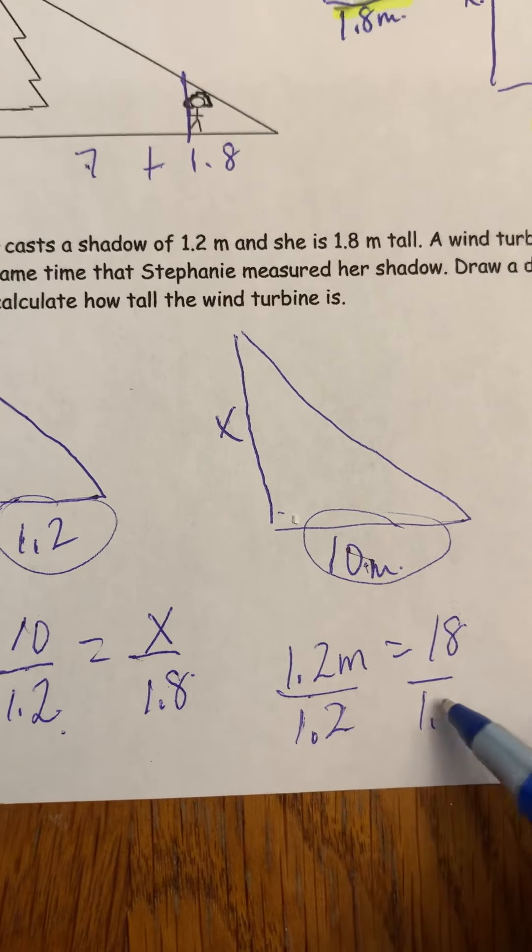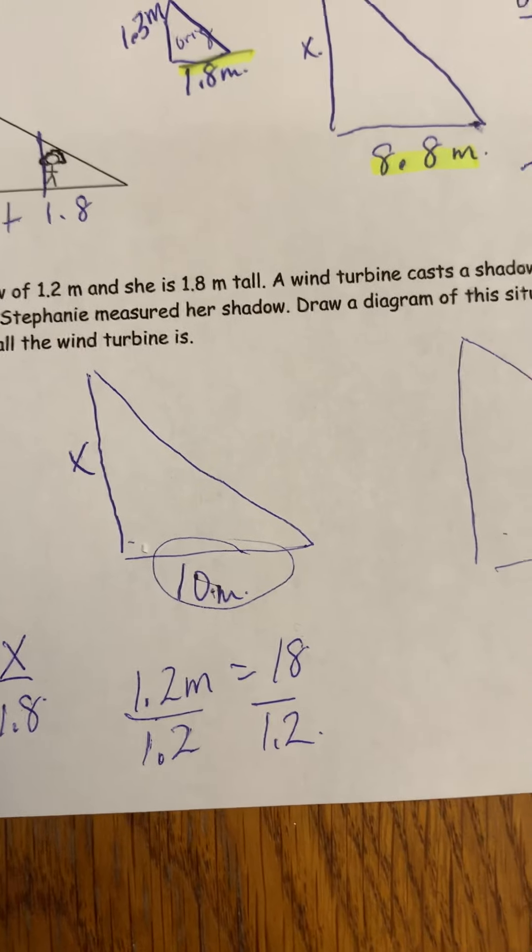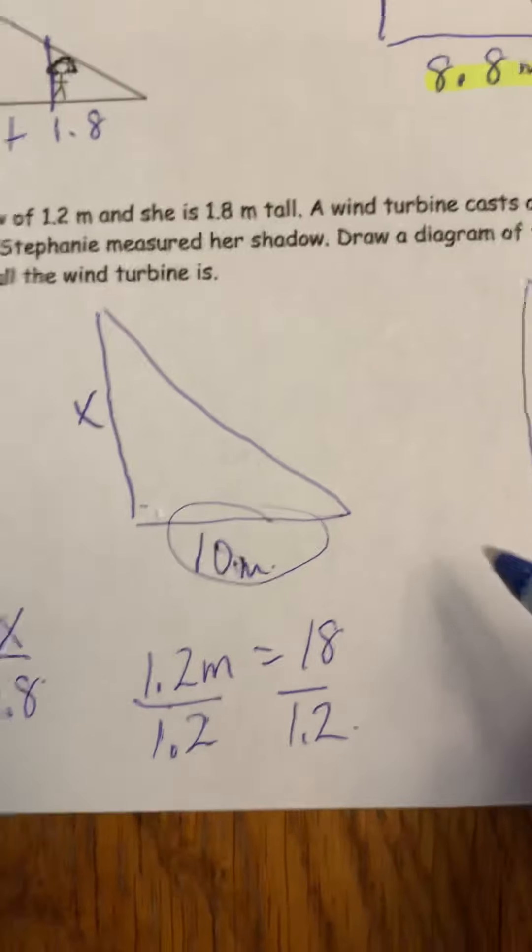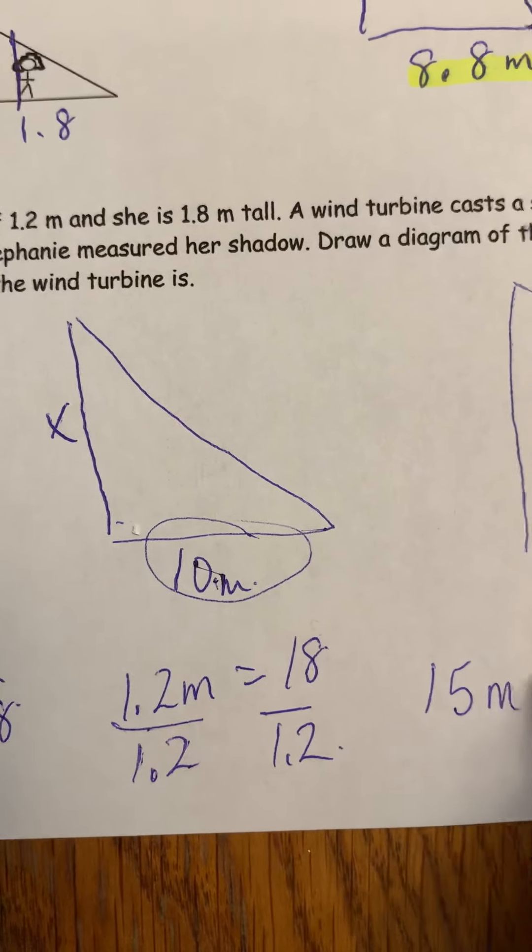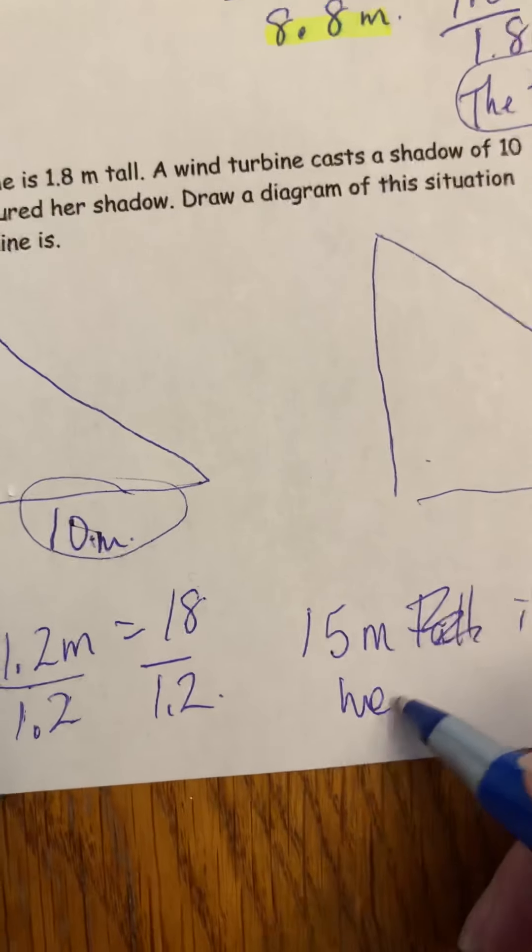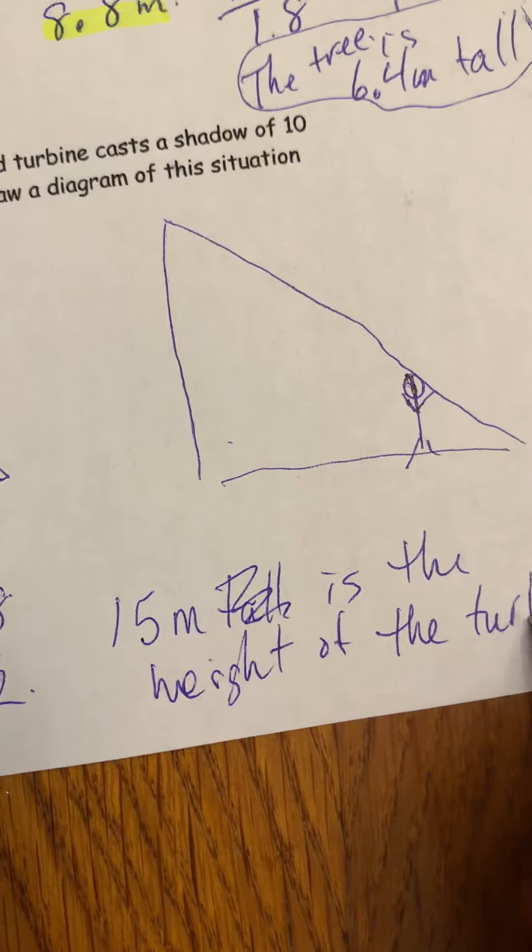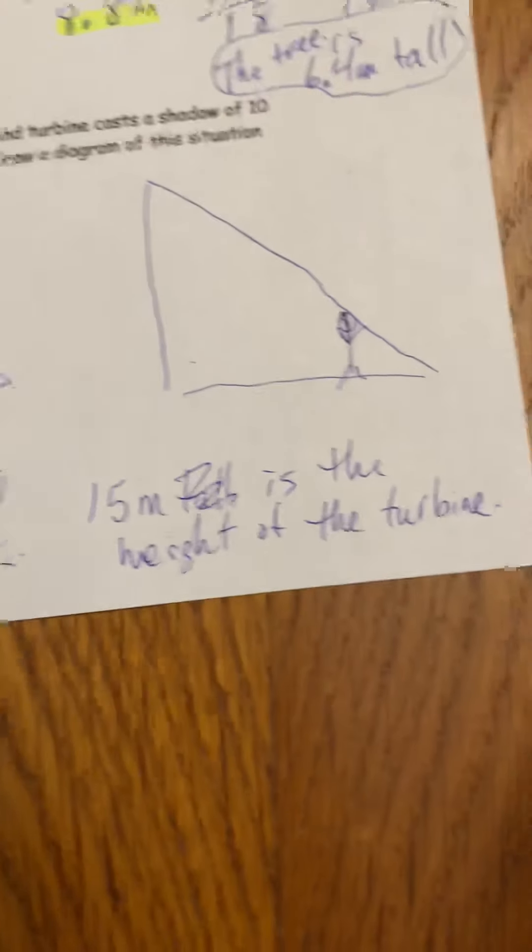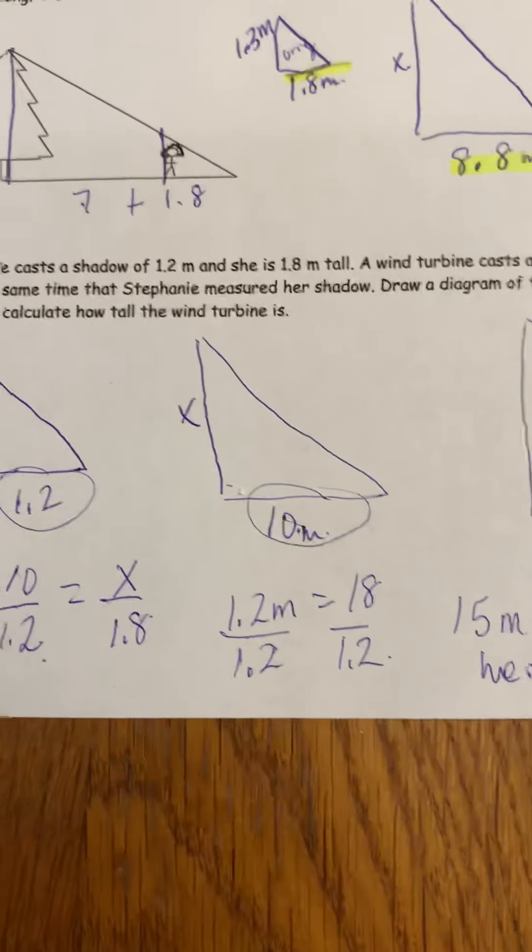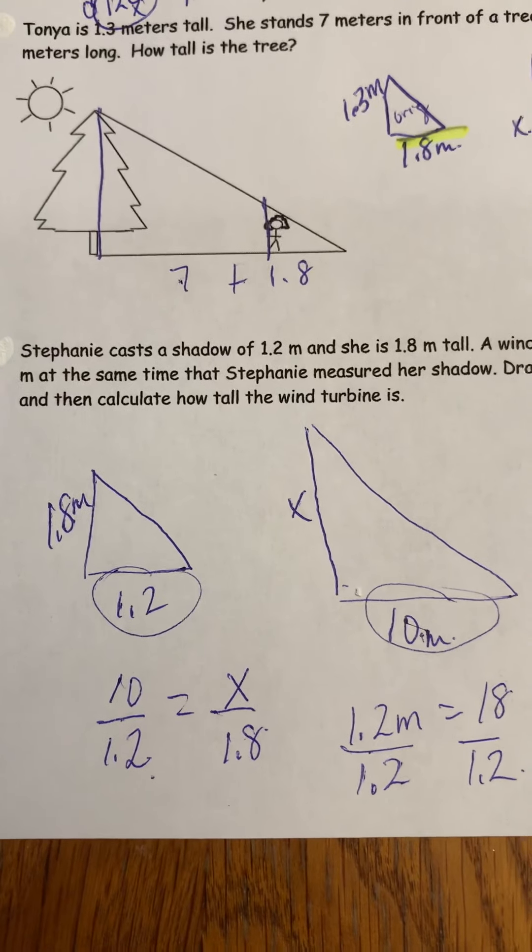One and two tenths of a meter is equal to 18. When we multiply by 10, we're going to divide both sides by one and two tenths, and we figured out that the wind turbine is 15 meters tall, or 15 meters is the height of the turbine, because we're always going to have a sentence. So now I'm going to give you an assignment from the textbook, just a few questions to try.